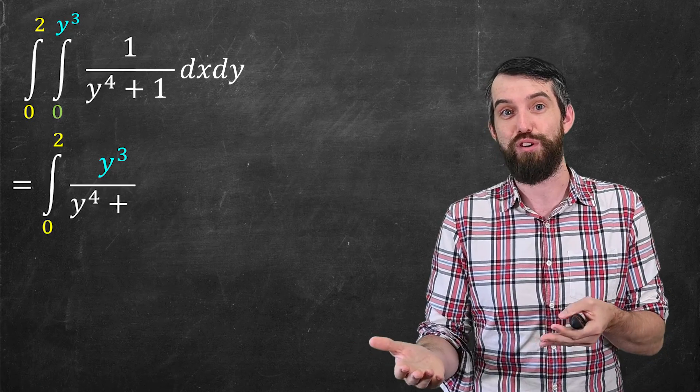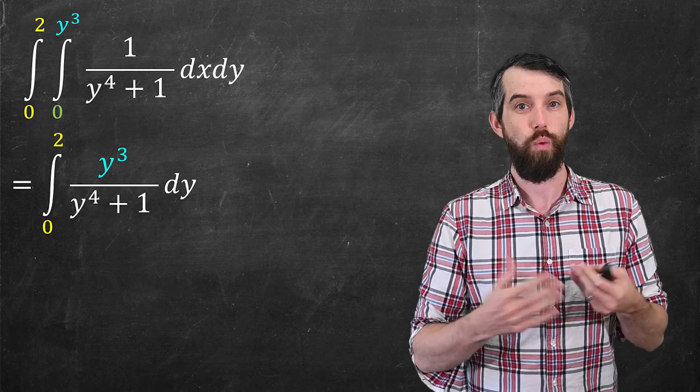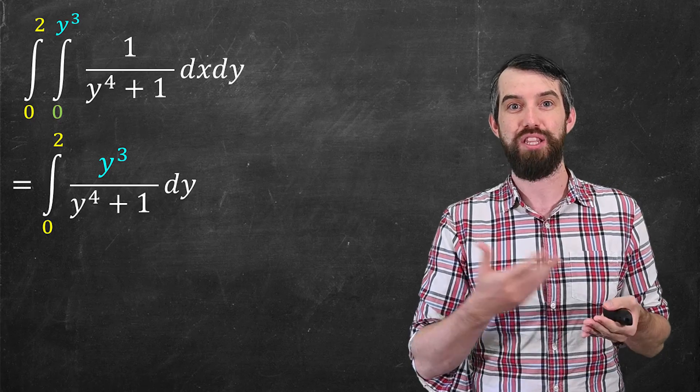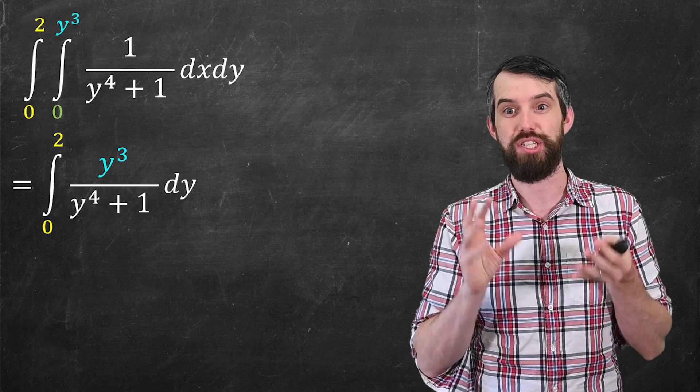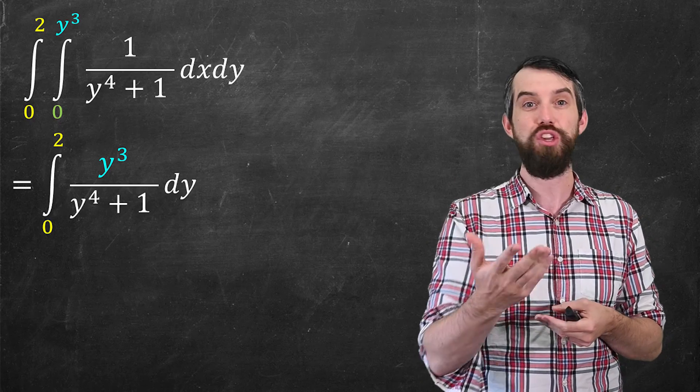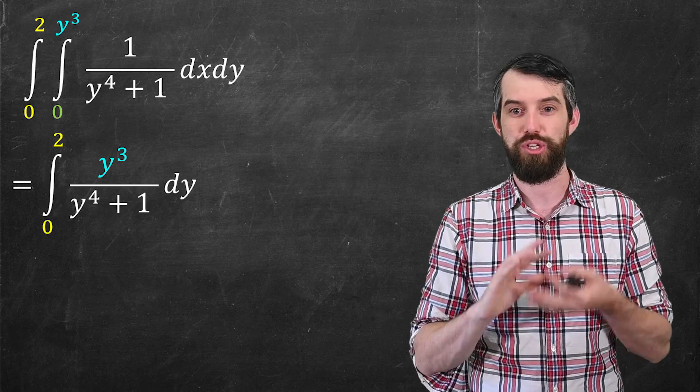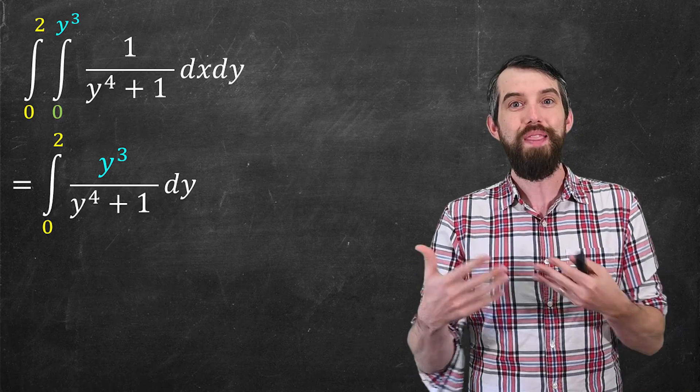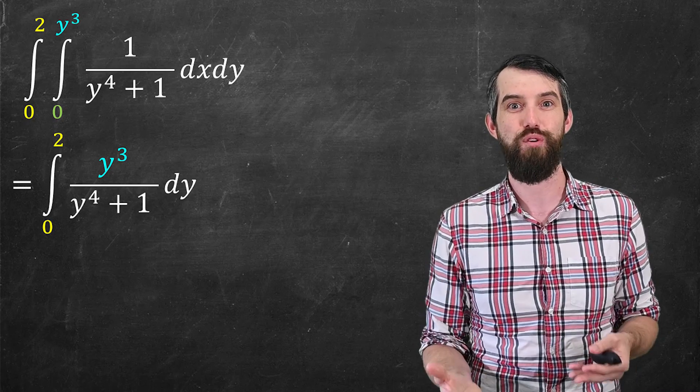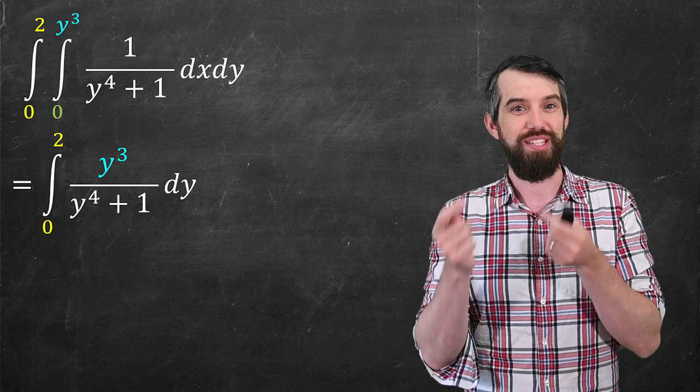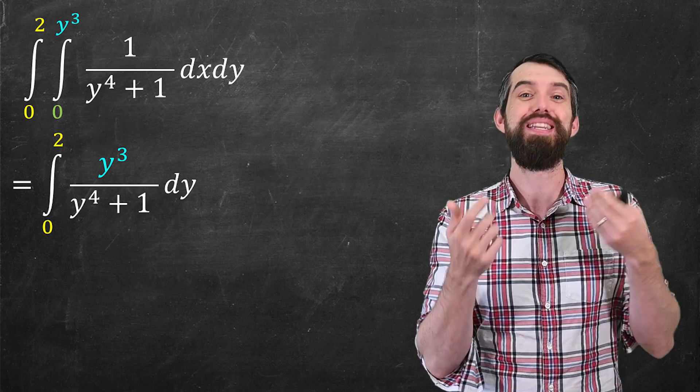So what is it? The one over y to the fourth plus one is just a constant. It just comes out. And then I just have to plug in the y cubed on the top and the zero on the bottom, which I can ignore. So just doing that inner integral is just very straightforward. And now this integral with respect to y that I've gotten is now doable.